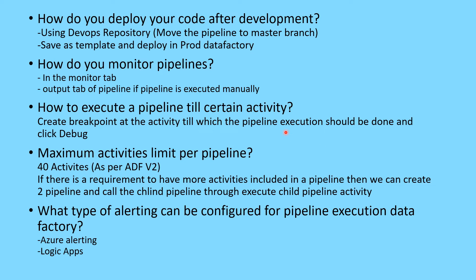The next question: how do you execute a pipeline till a certain activity? You can create a breakpoint. Say a pipeline has 10 activities and you want to execute only until the third activity — go to that third activity, and in the top right corner you will see a breakpoint option. Click on that red circle and then click debug. The pipeline will execute only until the third activity. So you set a breakpoint at the activity where you want pipeline execution to stop, then click debug.